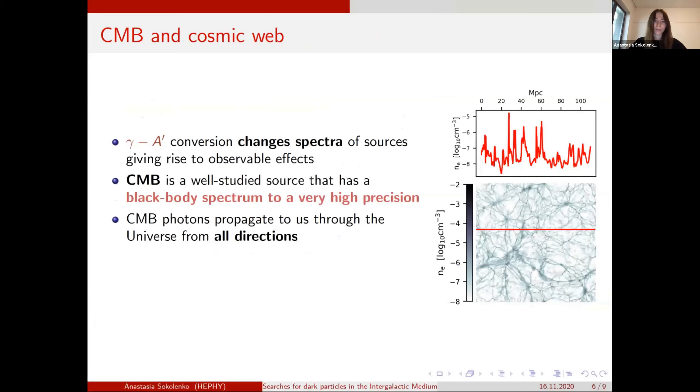Because photons can oscillate into dark photons, it modifies the spectra of photons. And one of the best studied examples is the cosmic microwave background, because we know that to a very high precision, it's a black body spectrum. And if we have these oscillations, then we would modify the spectra. We could add more photons or remove more photons from its spectrum.